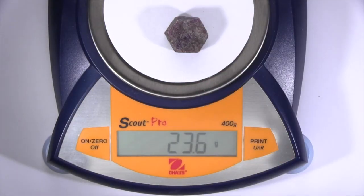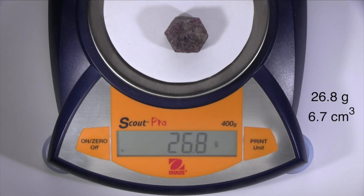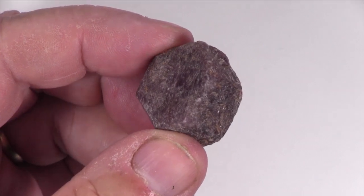This specimen has a mass of 26.8 grams and a volume of 6.7 cubic centimeters. Dividing mass by volume gives you its density, expressed in grams per cubic centimeter, which has the same value as its specific gravity. When you heft this specimen, it feels heavy.